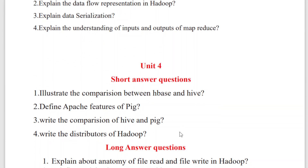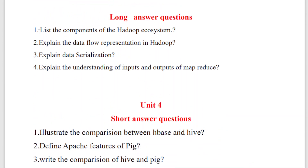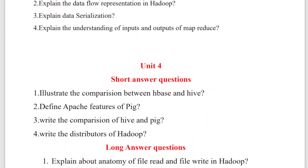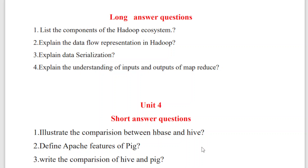Moving on to Unit Three — the syllabus is also very short, so I've given only a few questions. Cover the components of the Hadoop ecosystem, data flow representations in Hadoop, what is meant by serialization, and the inputs and outputs of MapReduce. Also cover data serialization — I think there are three to four concepts here, so prepare all of them.